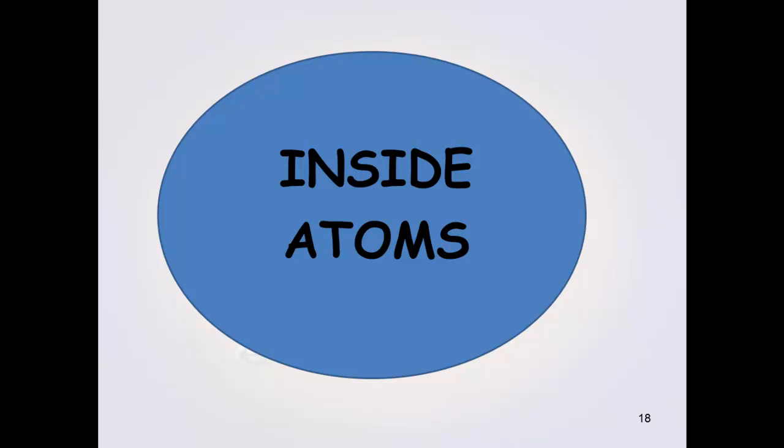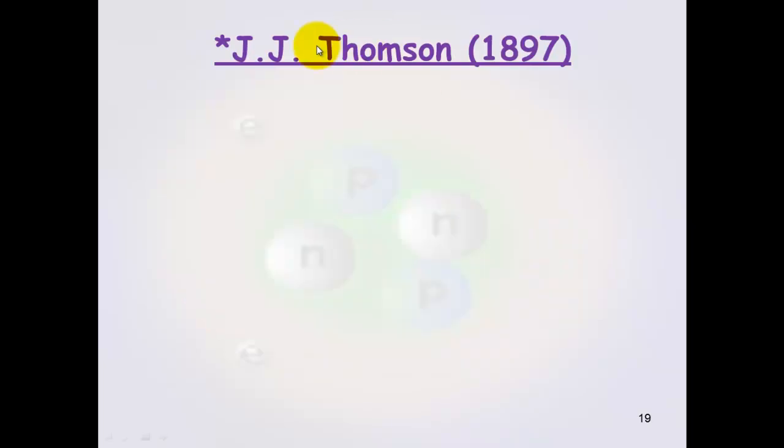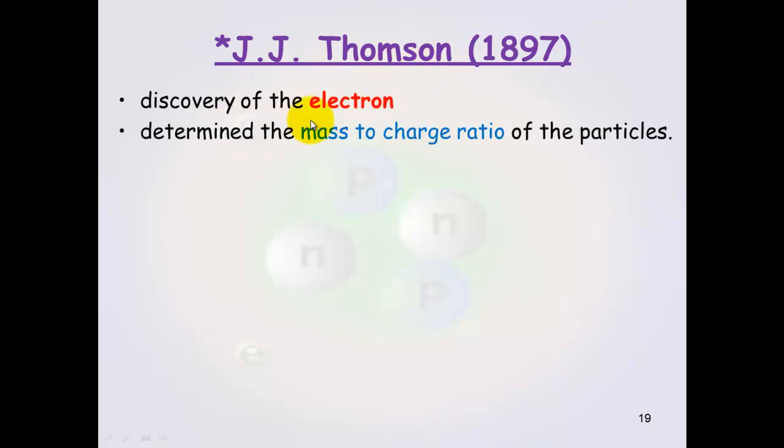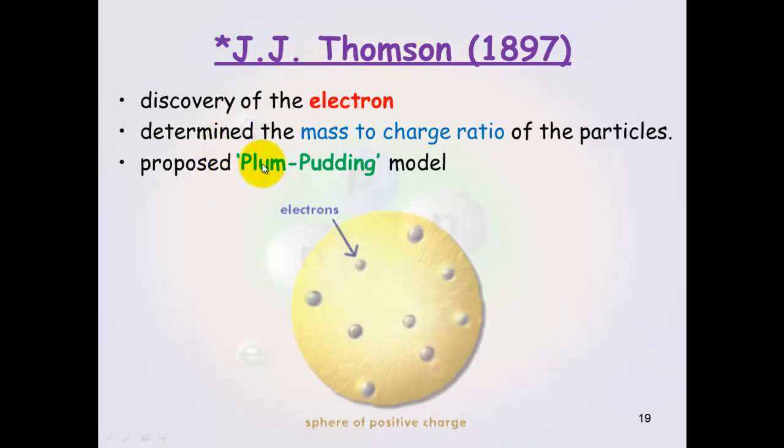Okay, let's have a look at inside atoms and how scientists figured out what was inside an atom. Because remember at the moment we're looking at Dalton's billiard ball model. So J.J. Thomson, he discovered the electron and also determined the mass to charge ratio of particles. His model was called the Plum Pudding model because basically the way his model worked was that there were negative electrons in a positive sphere.